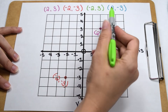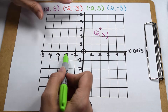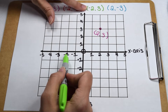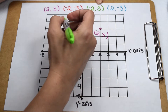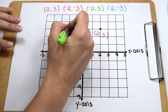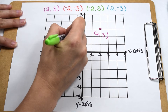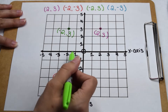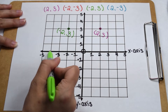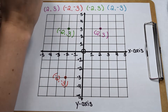For our next ordered pair, we're going to start with a negative 2, which means we're going to go two places to the left of the origin. Our y-value of 3 is positive since it has no sign in front of it, which means I'm going to go up three places. When I plot the point (-2,3), I notice I'm in quadrant 2. All x-values in quadrant 2 are negative, and all y-values in quadrant 2 are positive.